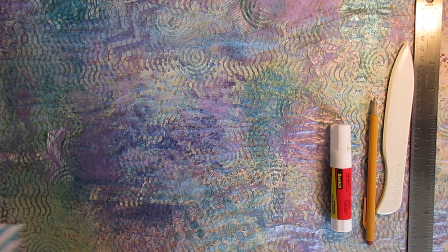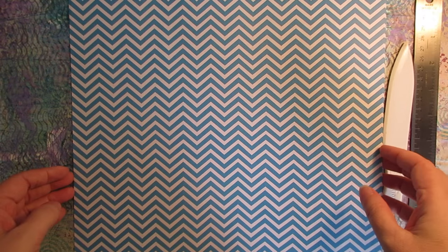So get your scrapbook paper out, 12 by 12, fancy side down. You can use a double-sided or paint, stamp something on the blank side because both sides do show.